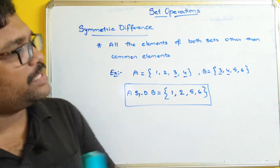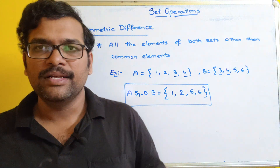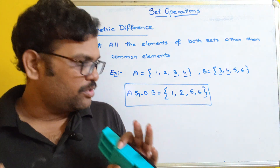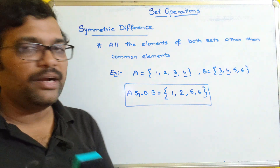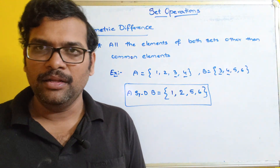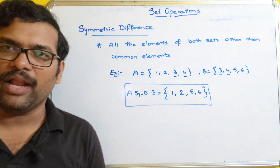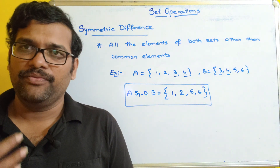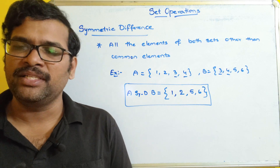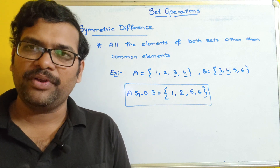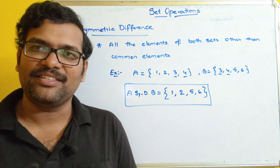So these are all the different set operations that can be performed on sets: union, intersection, disjoint sets, difference, complement, and symmetric difference. Let us stop here. If you have any difficulty regarding any operation, feel free to post your doubts in the comment section and I will try to clarify them. If you enjoyed the session, please like, share with your friends, and don't forget to subscribe to our channel. Thanks for watching, thank you very much.